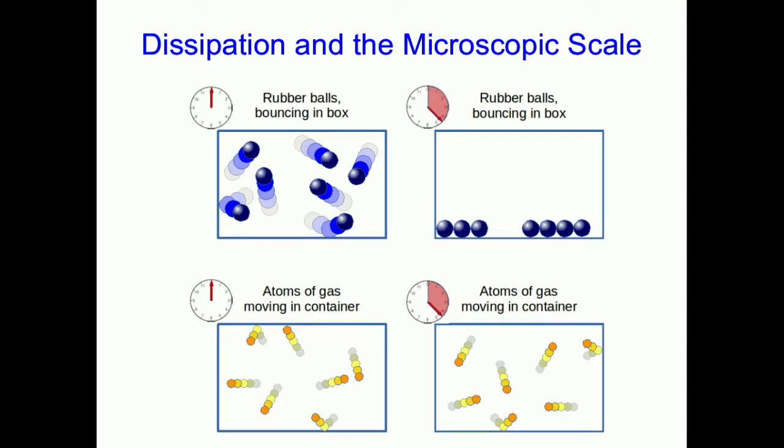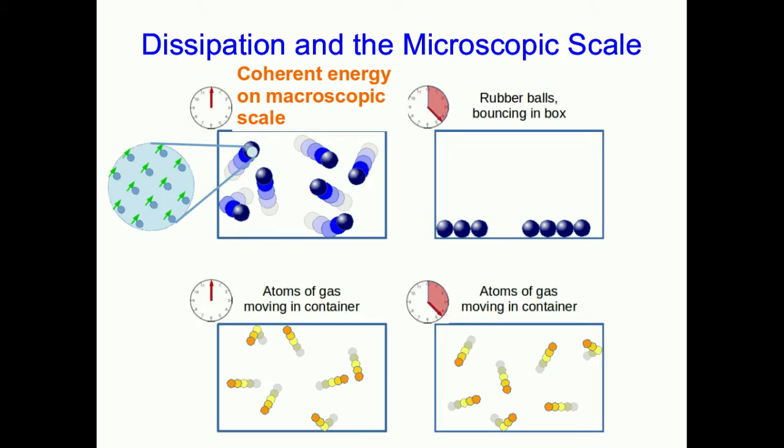Well, the rubber balls, of course, are made out of atoms, and initially those atoms are moving in tandem, and so the system has a lot of coherent energy. We say that it has energy at the macroscopic scale. By macroscopic, physicists just mean length scales that we experience on a day-to-day basis and have access to with our own senses.